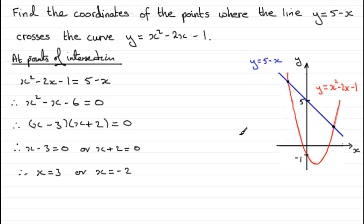And a look at the sketch here would seem to suggest that this is right. We've got x is minus 2 at this point here. Let's just mark it in minus 2, and we've got x equals 3 would be this point over here.